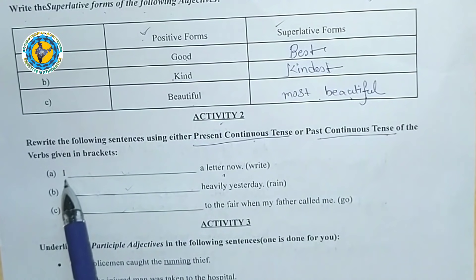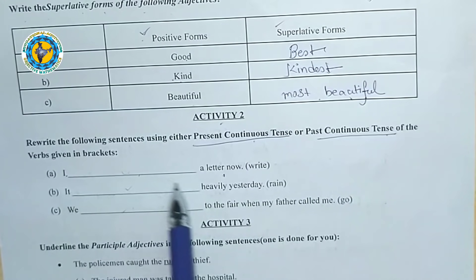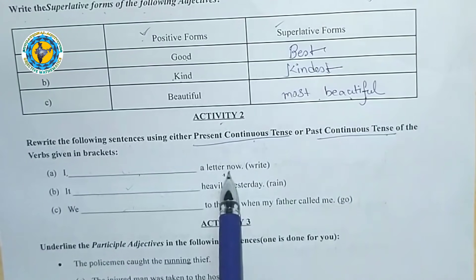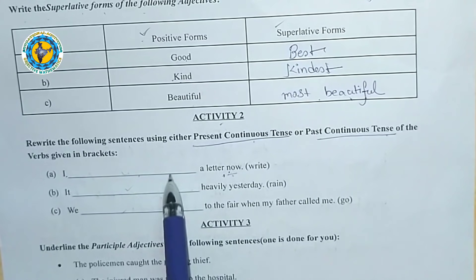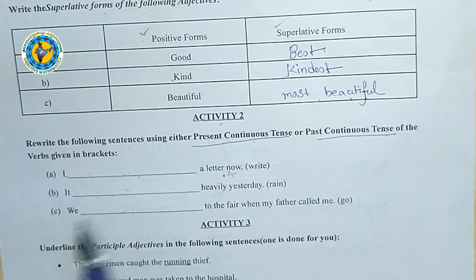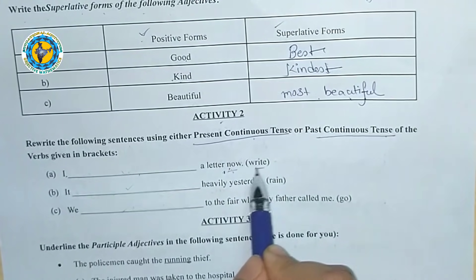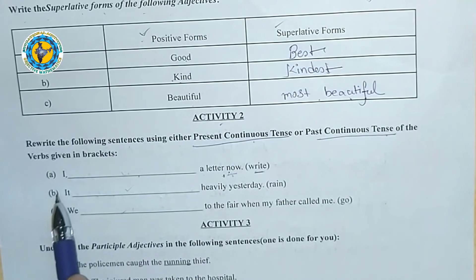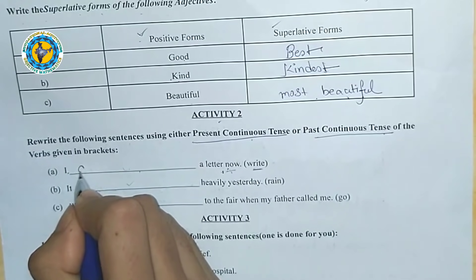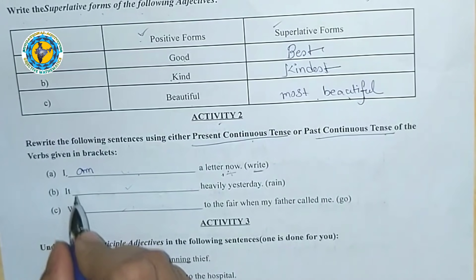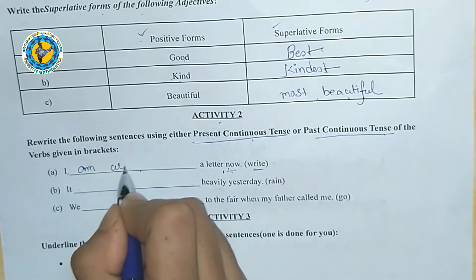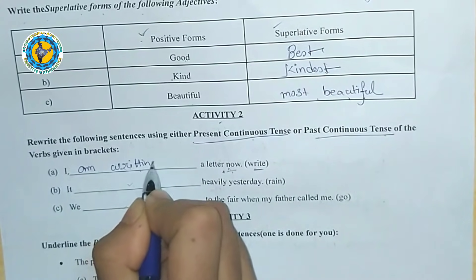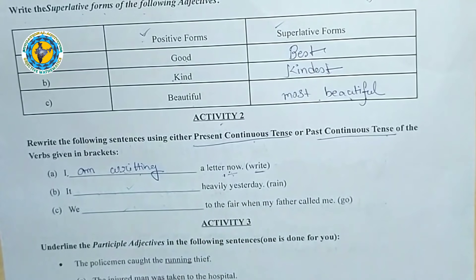Look at the first sentence: 'I dash a letter now.' The word 'now' means 'akon' — this indicates present tense. So we convert the verb to present continuous tense. The answer is: 'I am writing a letter now.' We use 'am' after 'I' for present continuous tense.